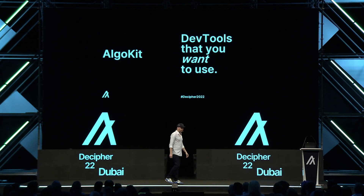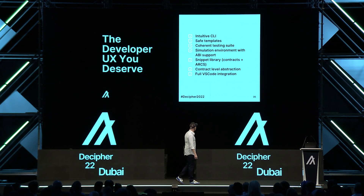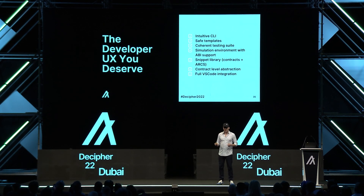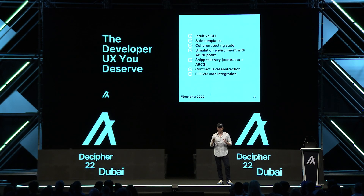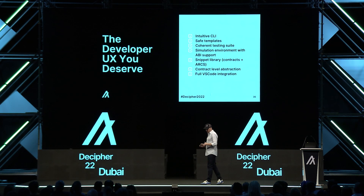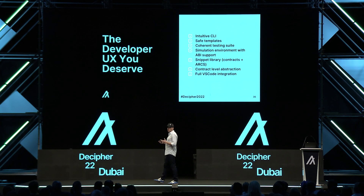So, how do we get there? The answer is AlgoKit — a soup-to-nuts complete toolkit that you can use to build, test, and deploy applications for Algorand. I'm going to break down some of the components inside so you can get an idea of what it's going to be like.